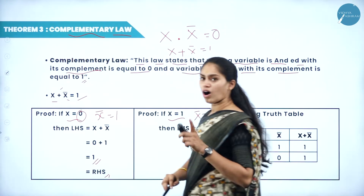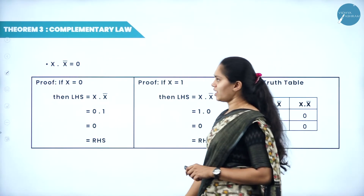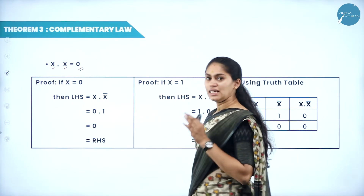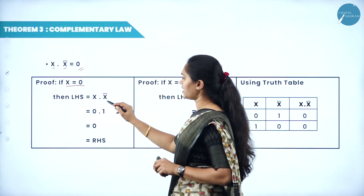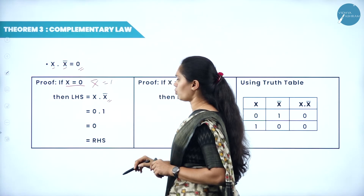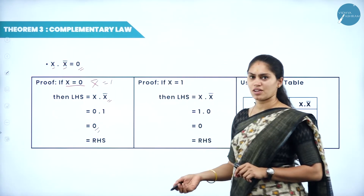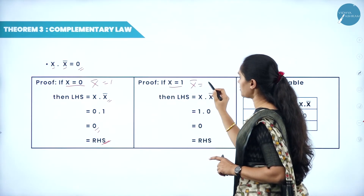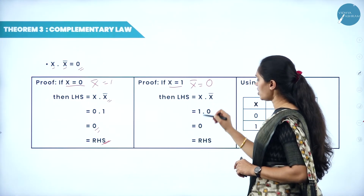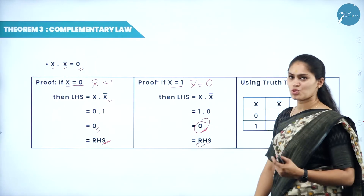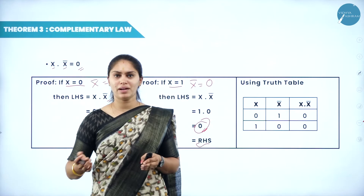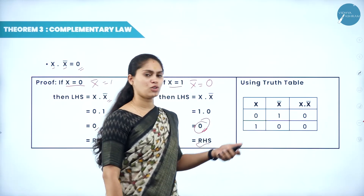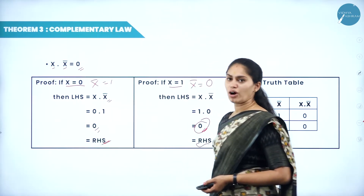For the AND part of complementary law — x dot x-bar equals 0: when x equals 0, x-bar equals 1, and 0 into 1 equals 0 (any number with 0 is 0), equal to RHS. When x equals 1, x-bar equals 0, and 1 into 0 equals 0, equal to RHS. Any variable combined with its complement using AND will result in 0. The truth table shows 0 into 1 is 0 and 1 into 0 is 0.